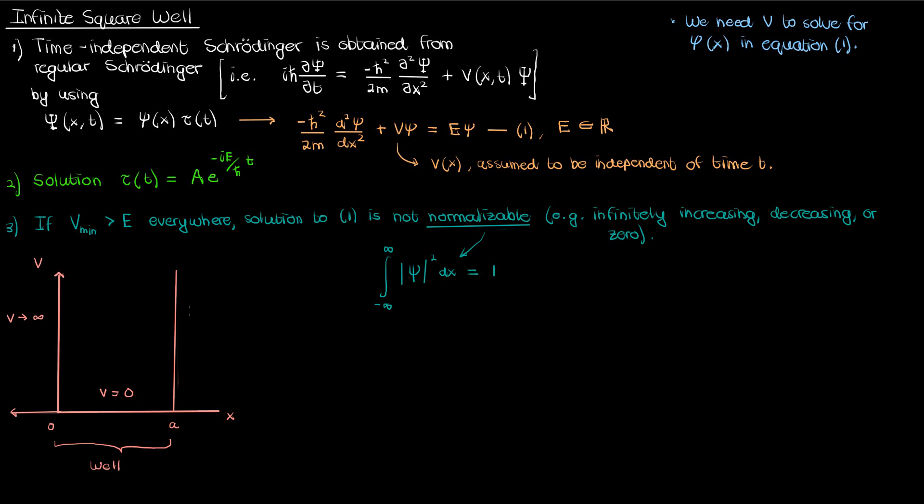Outside the well however I've stepped it up to infinity. If I write V as a piecewise function here's what it looks like. It's 0 between 0 and a and infinity otherwise. And if I copy paste this time-independent Schrödinger equation here, what does this mean for the small solution psi of x then?